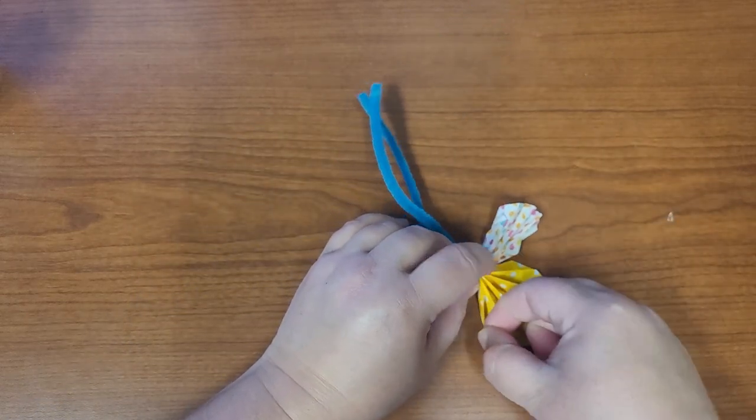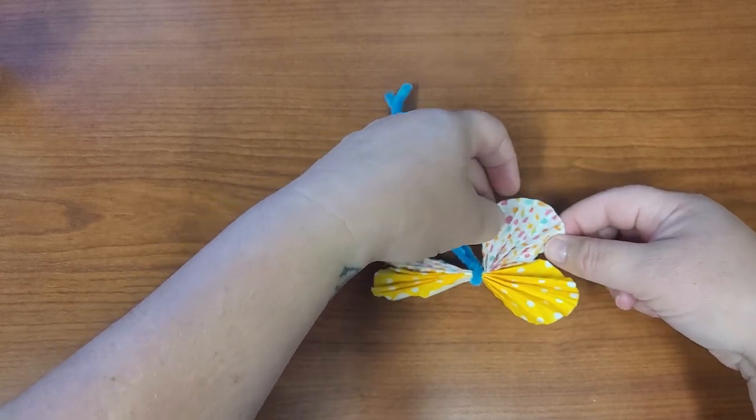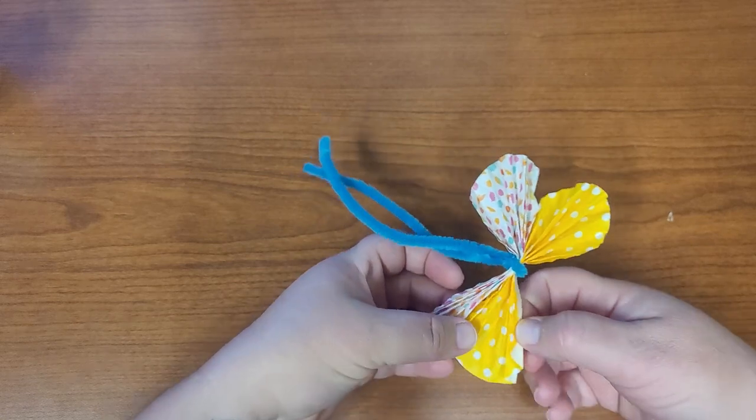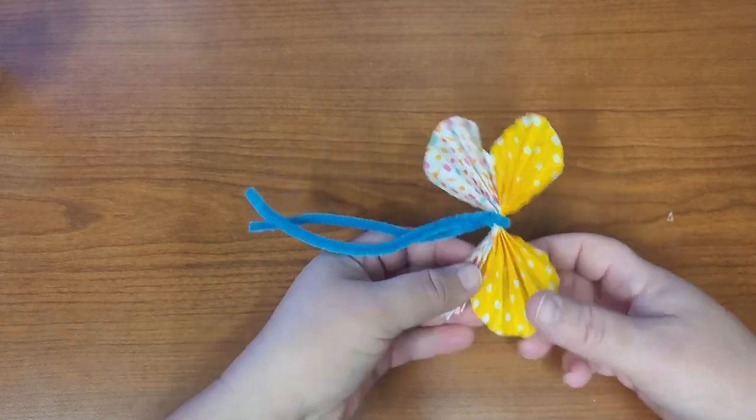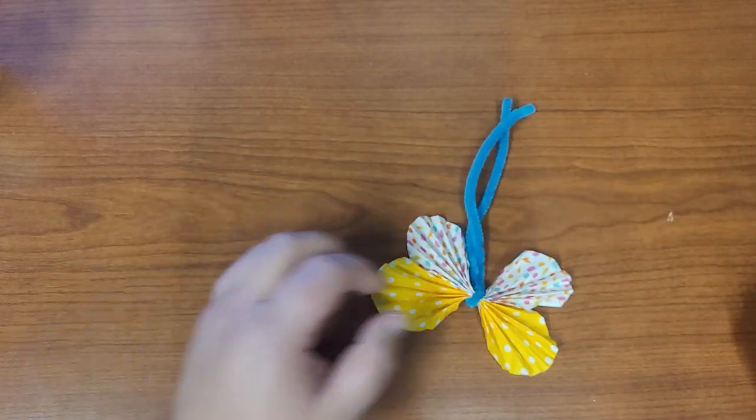So you want to be gentle when you do this. We don't want to tear the cupcake liner. You can see the way we folded it when we open it up, it looks like butterfly wings. What a beautiful butterfly.